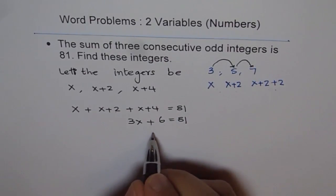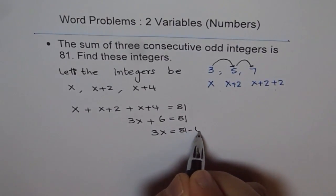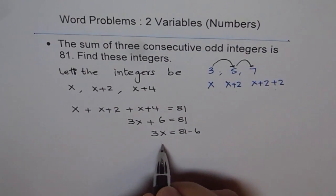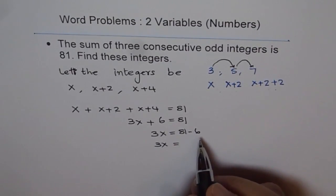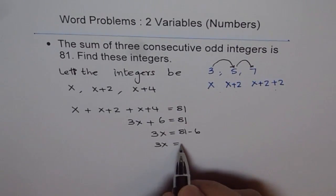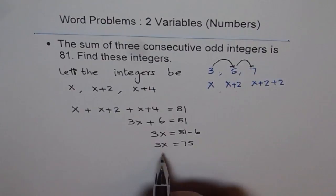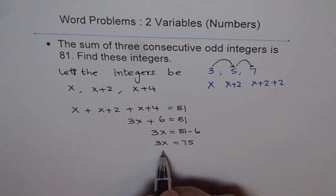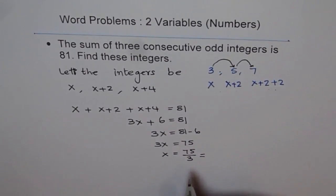So we get 3x + 6 = 81. Then 3x = 81 - 6. At this stage you can use the calculator also. We get 81 - 6 as 75. And from here you can say x divided by 3 - divide both sides - you get x = 75/3, which gives you 25.